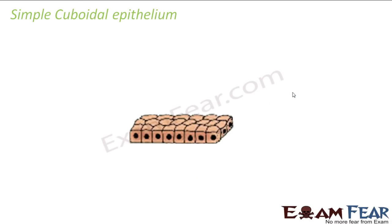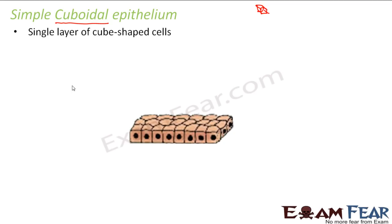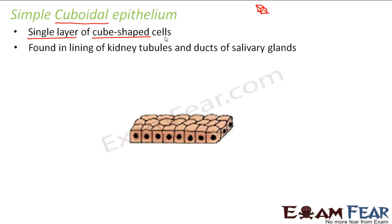Now let us look at the next type: simple cuboidal epithelium. The term cuboidal tells us a lot about this kind of epithelium. Cuboidal means something in the shape of a cuboid. These are a single layer of cube-shaped cells — again, simple epithelium means single layer, and cuboidal means cube-shaped cells. They are found in the lining of kidney tubules and ducts of salivary glands. If you look at the picture, you can see small cubes arranged together to form simple cuboidal epithelium.